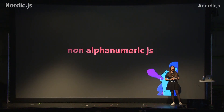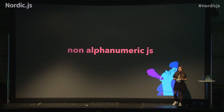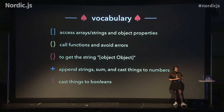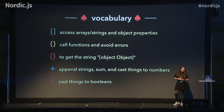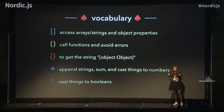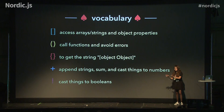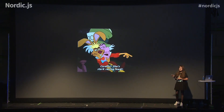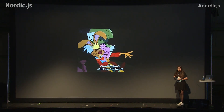With that being said, let's talk about non-alphanumerical JavaScript, which is JavaScript without numbers or letters, just like the examples I showed you before. What I'm going to show you next is how to write valid JavaScript only using: square brackets to access arrays, strings, and object properties; parentheses to call functions and avoid errors; curly brackets to get the string 'object object'; the plus operator to append strings, add numbers, and cast things to numbers; and the exclamation point to cast things to Boolean.